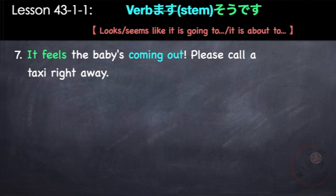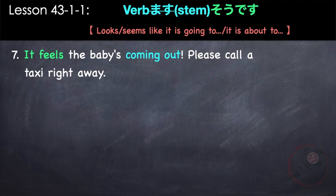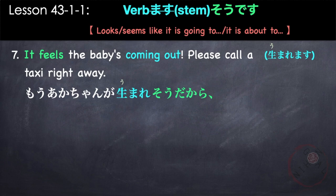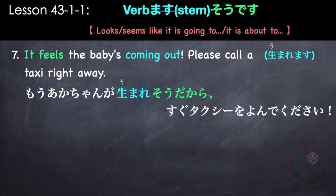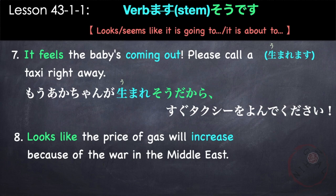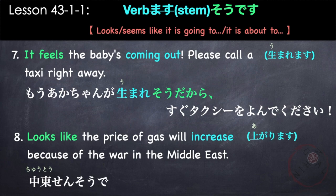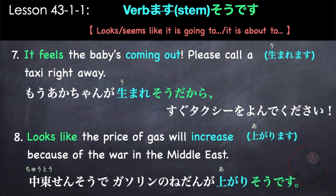'It feels like the baby is coming out. Please call a taxi right away.' Our verb is umaremas, the baby is coming out. Another example: 'Looks like the price of gas will increase because of the war in the Middle East.' The verb is agarimasu. Chuu to senso de, GASOLIN no neidan ga agari so desu.